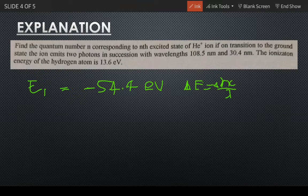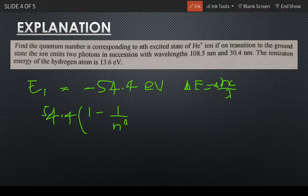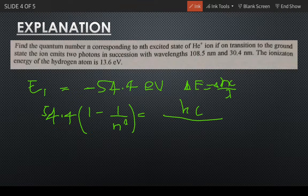We get 54.4 times 1 minus 1 by n squared equals to hc upon...